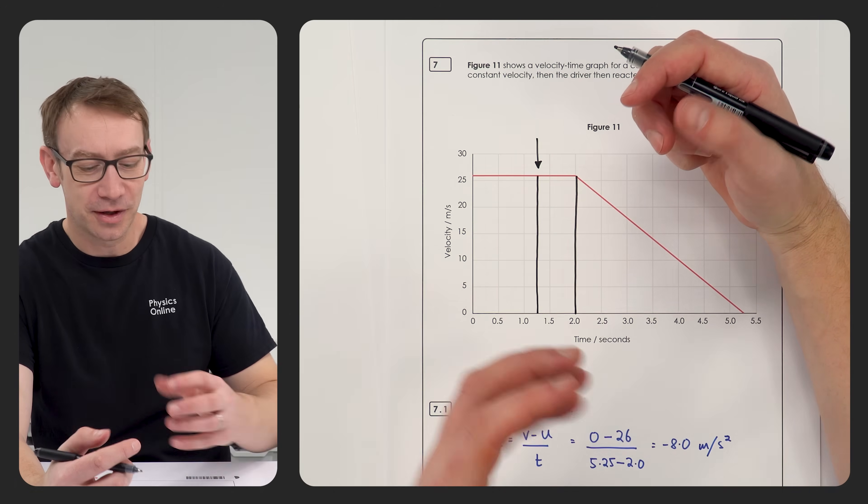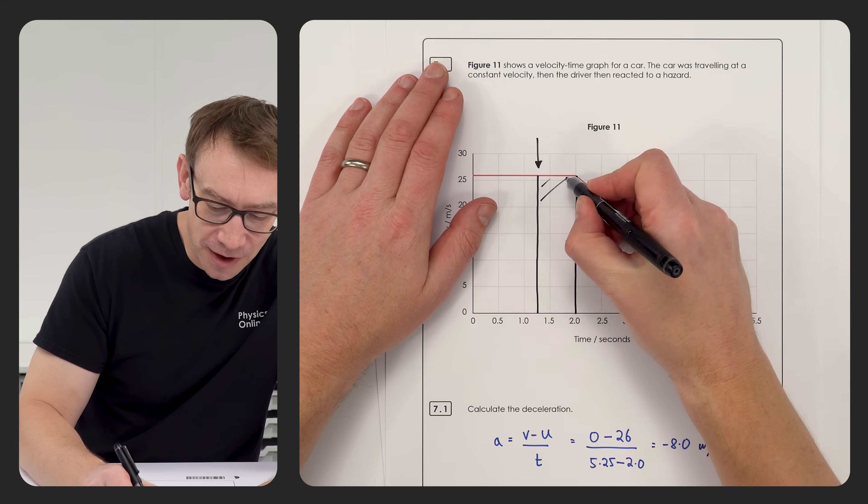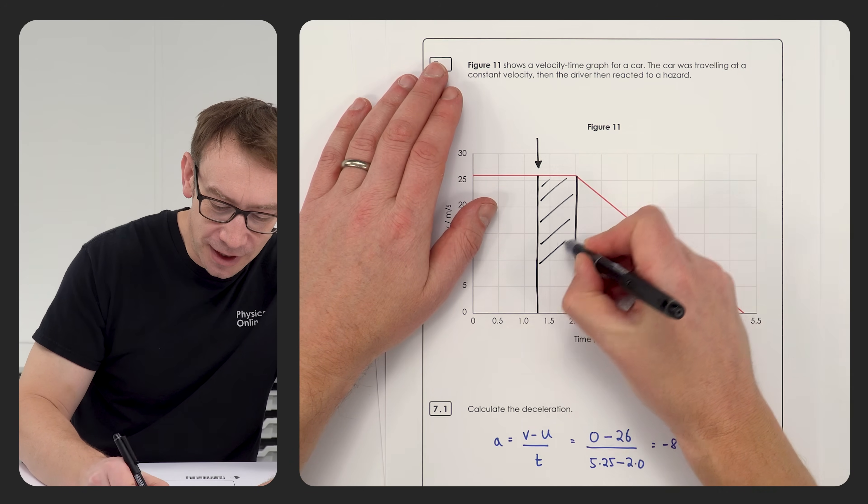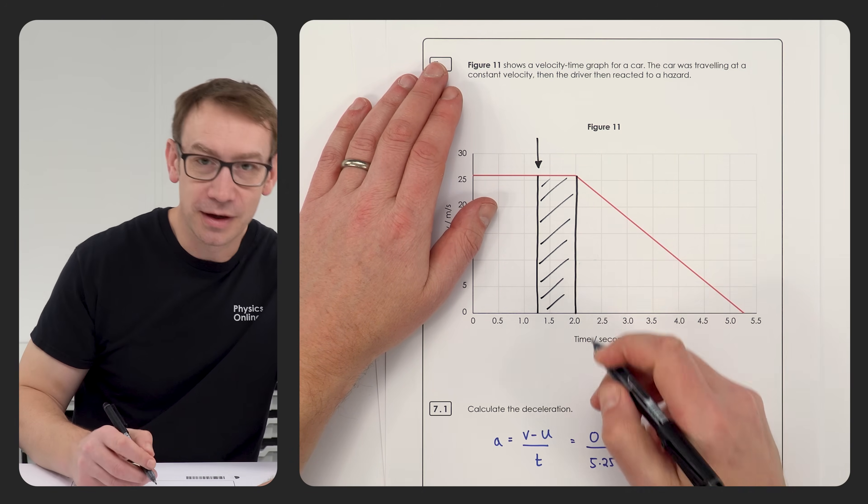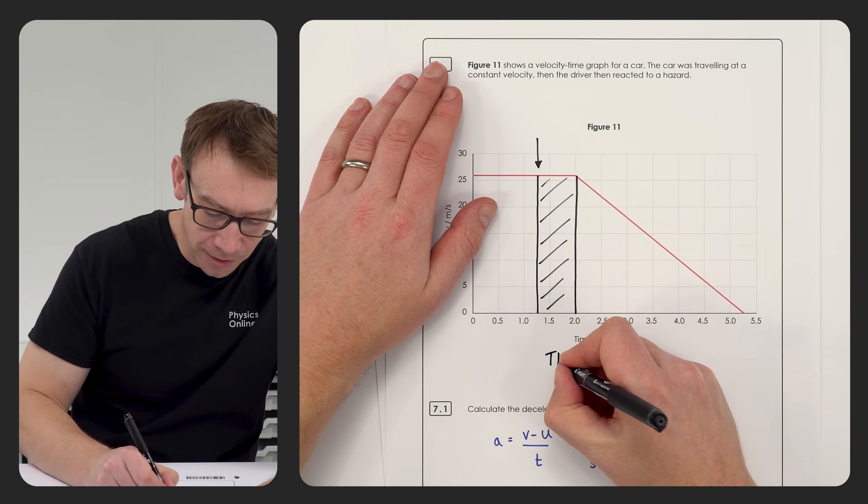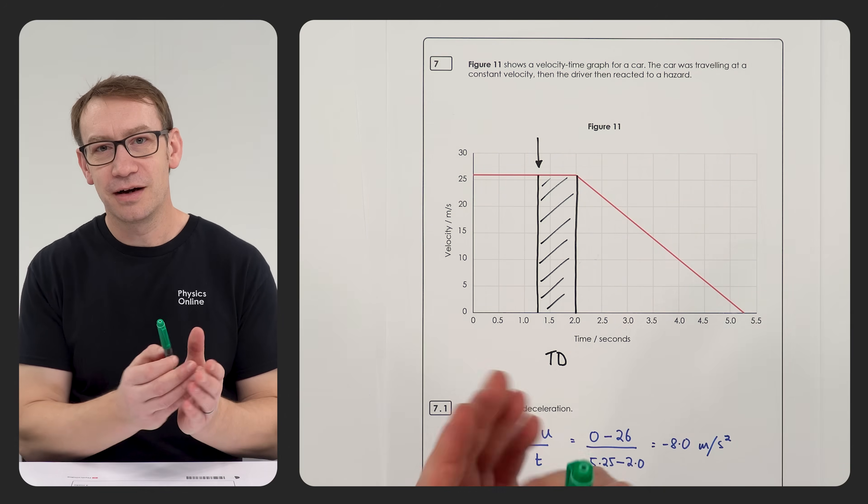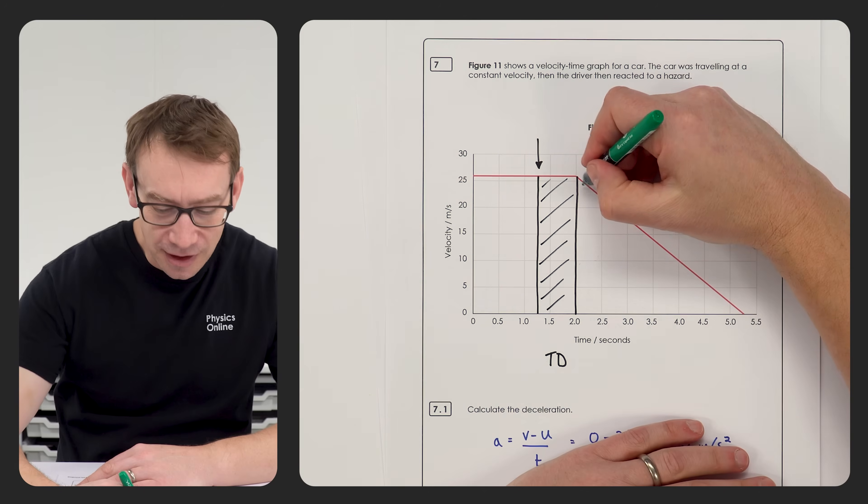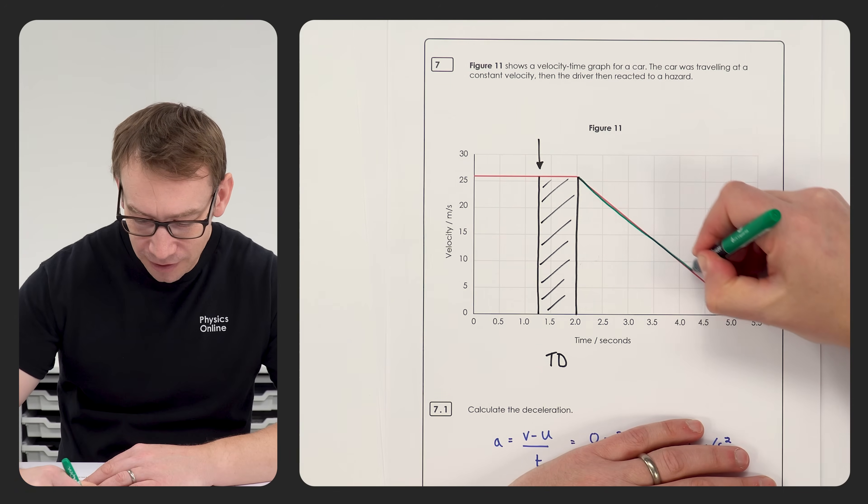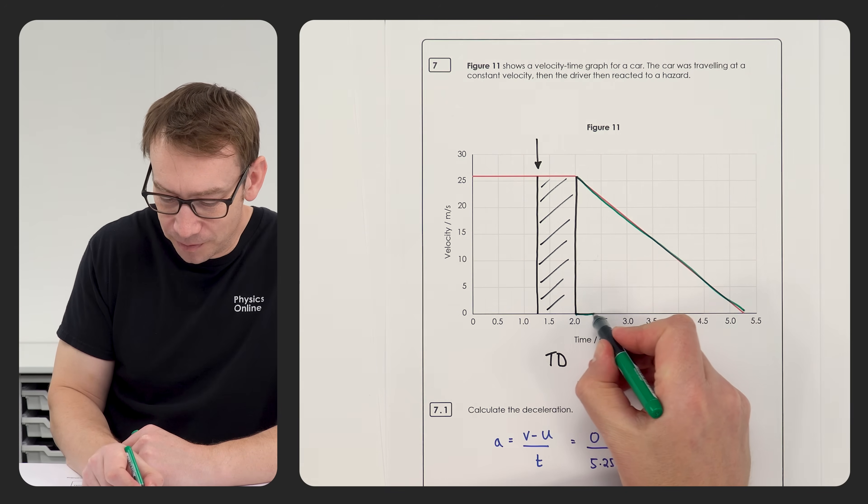And because we've got a velocity time graph, the area under that graph is equal to the displacement, the distance traveled. So this area here is going to be equal to the thinking distance. I'm going to call that TD. Of course they then put on the brakes, the car then starts to slow down.